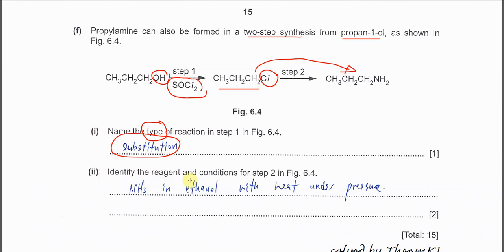Identify the reagent and conditions for step 2 in Figure 6.4. Now the chlorine is being substituted by NH2. The one we need to use is ammonia. Don't put in water—ammonia must be in ethanol. Then it can substitute the chlorine. Very important: many candidates forgot heat under pressure. Heat under pressure, then it will form this amine. That's all for this question, thank you.